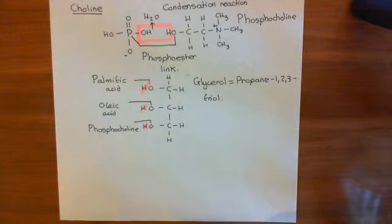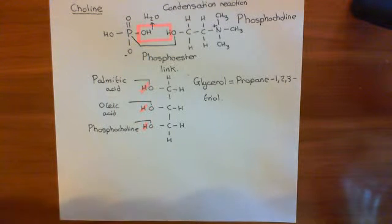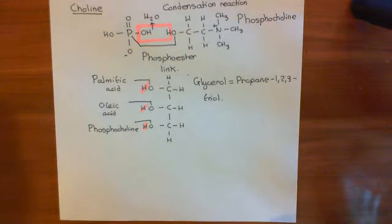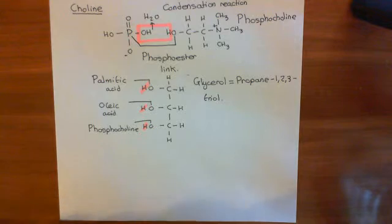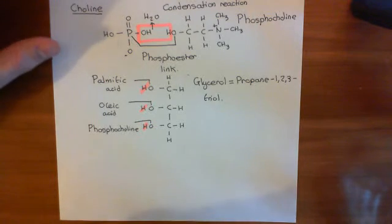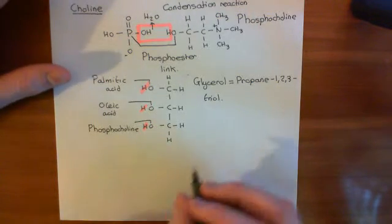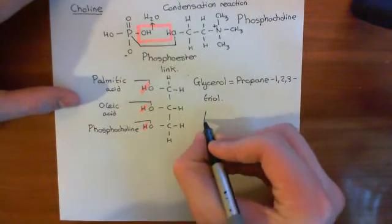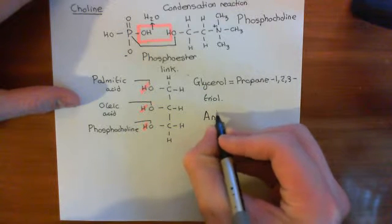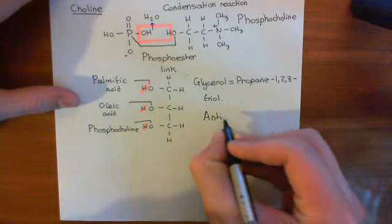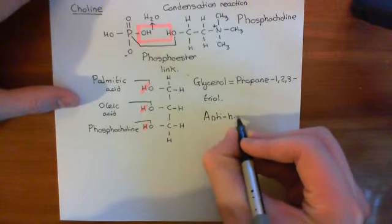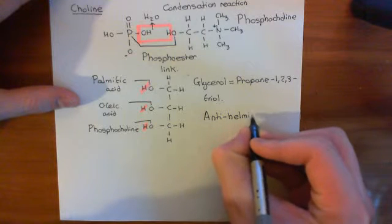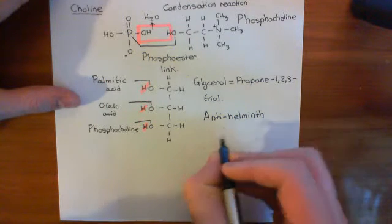We've seen this 1-palmitoyl-2-oleoyl-sn-glycero-3-phosphocholine, this POPC molecule. We've also talked about glutamate, the normal agonist for this GluCl channel. We're now going to talk about the anti-helminth drug ivermectin, which is used clinically both in human medicine and veterinary medicine.